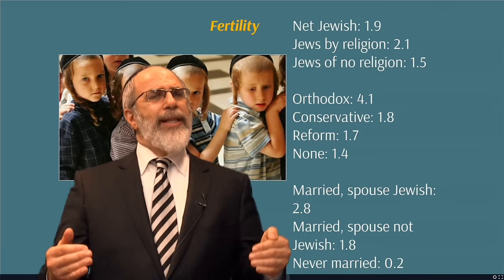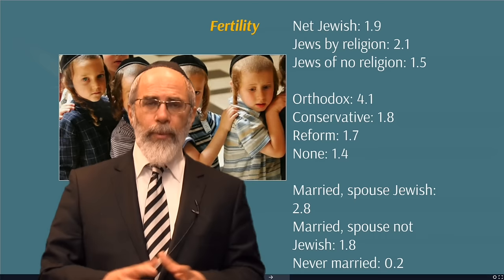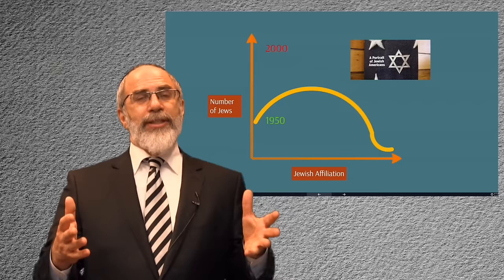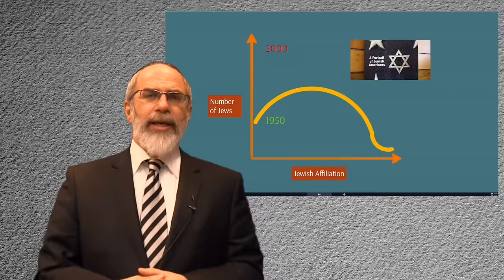I'd like to spend the last couple of minutes talking about Samuel Heilman's thesis. That's an extremely important one for us to understand if we're going to look at the future of the Jews of America. I know I said prophecy was down the hall, but this is a phenomenon that we have observed for the last half century, and so it's worth discussing. Here's basically what Dr. Heilman argues is happening to American Jewry.